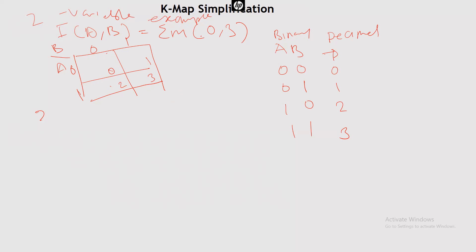This is the expression we're trying to simplify. Since 0 appears here, we place a 1. We also have 3 here. So we can't group 0 and 3 diagonally — that is not allowed. So we have group 1 here, and group 2 here separately.